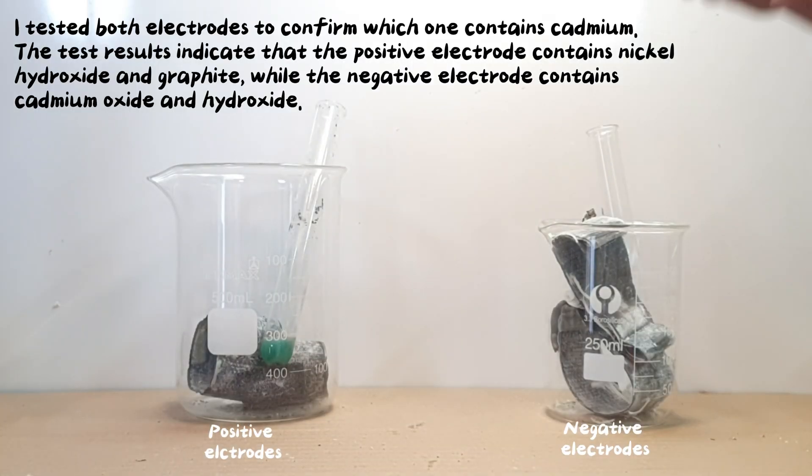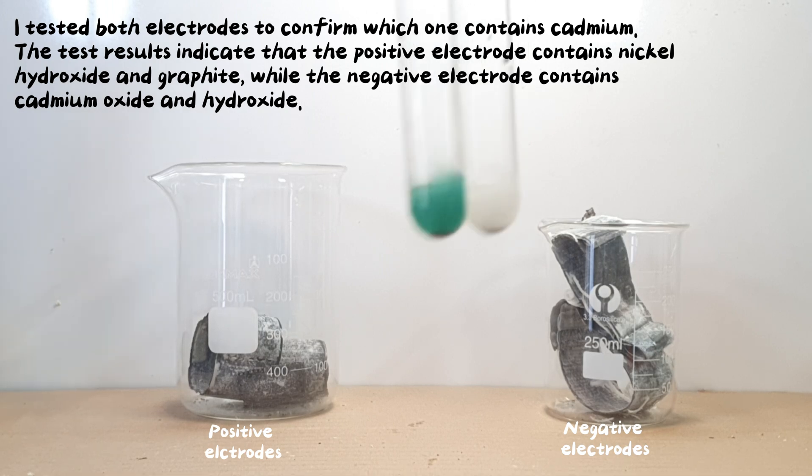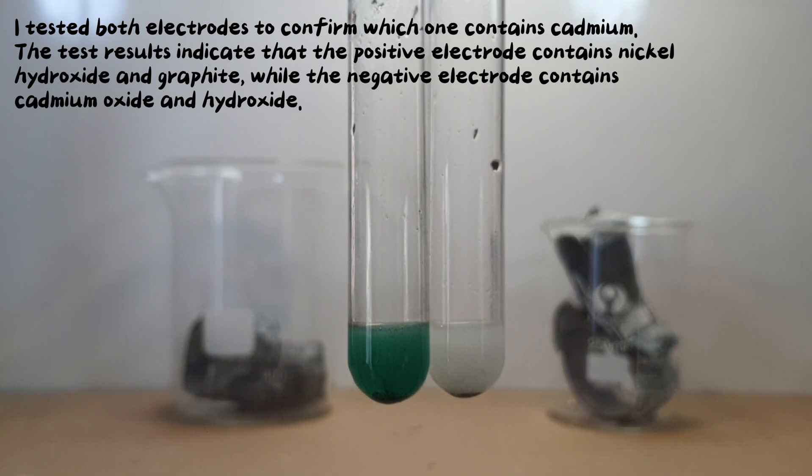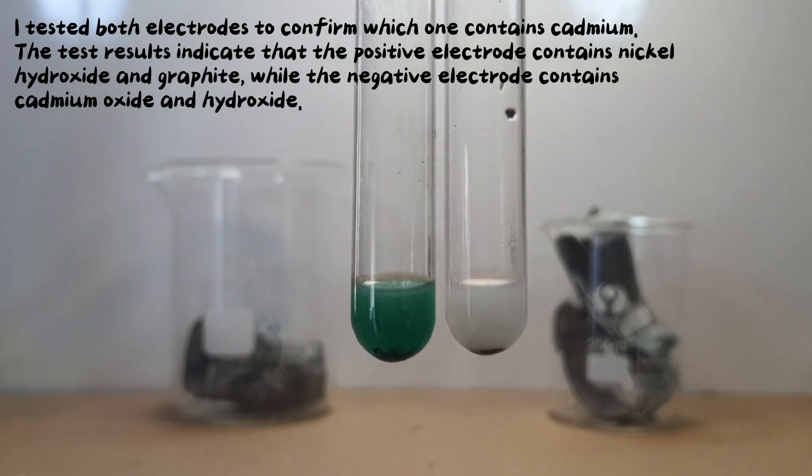I tested both electrodes to confirm which one contains cadmium. The test results indicate that the positive electrode contains nickel hydroxide and graphite, while the negative electrode contains cadmium oxide and hydroxide.